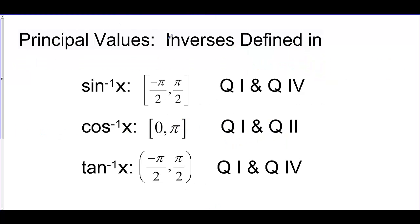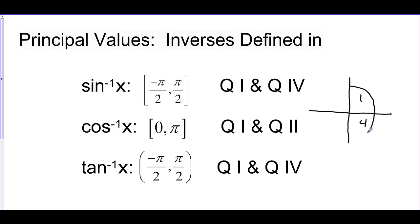To summarize the principal values each inverse function is defined in: for inverse sine, we use quadrant 1 and quadrant 4. For inverse cosine, the principal quadrants are 1 and 2. For inverse tangent, the principal values come from quadrant 1 and quadrant 4. So sine and tangent share quadrants 1 and 4, while cosine uses quadrants 1 and 2.